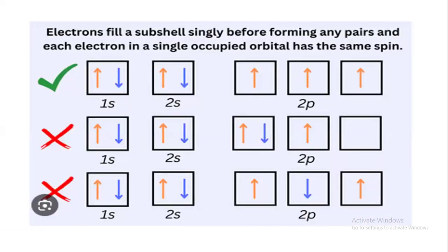Electrons fill a subshell singly before forming any pairs, and each electron in a singly occupied orbital has the same spin.